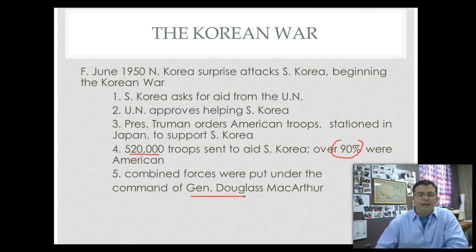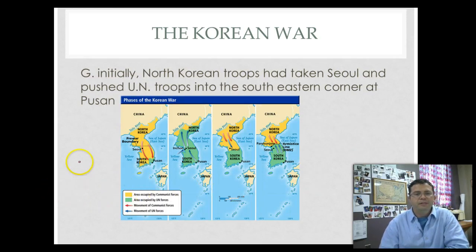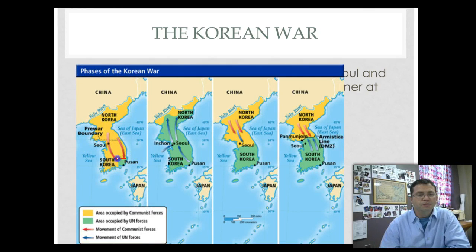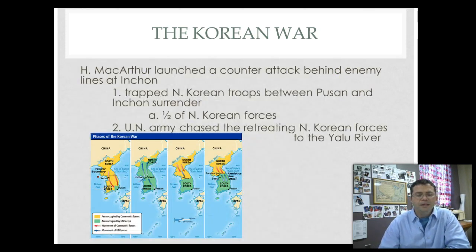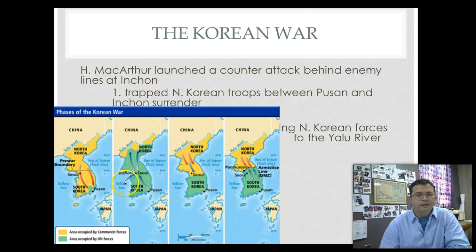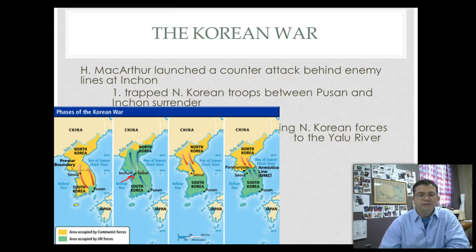In this section, we'll talk about how MacArthur and Truman came to no longer see eye-to-eye. The initial surprise attack saw North Korea pushing South Korean troops all the way to Busan, and North Korea successfully took over the capital of Seoul. MacArthur made a counterattack — launching a surprise offensive at Incheon. With the push from Busan and UN personnel behind enemy lines, they successfully pushed the North Koreans back all the way to the Yalu River. Half of the North Koreans surrendered to UN forces.